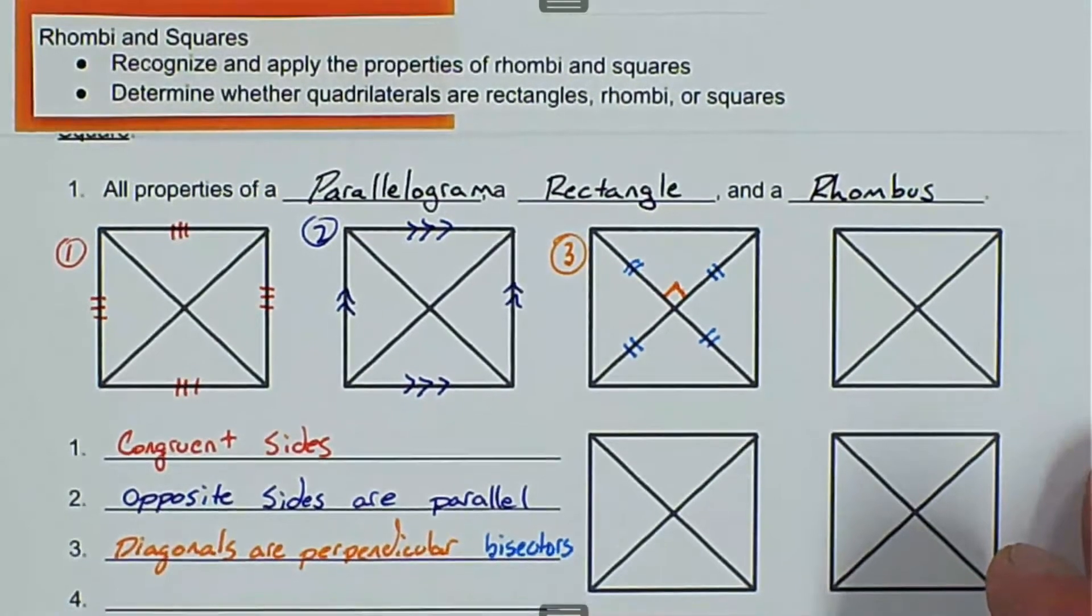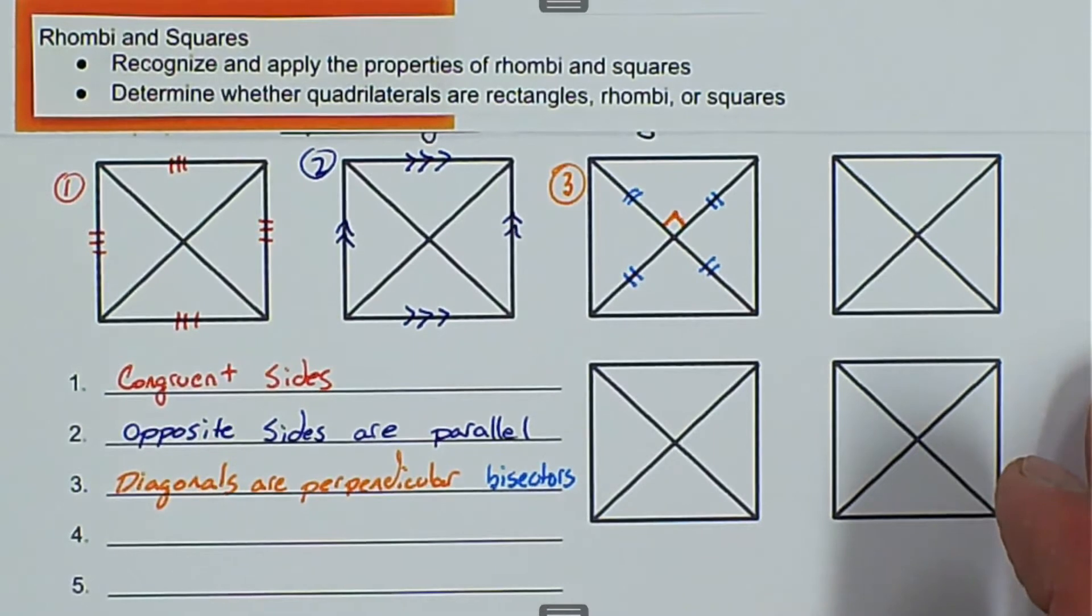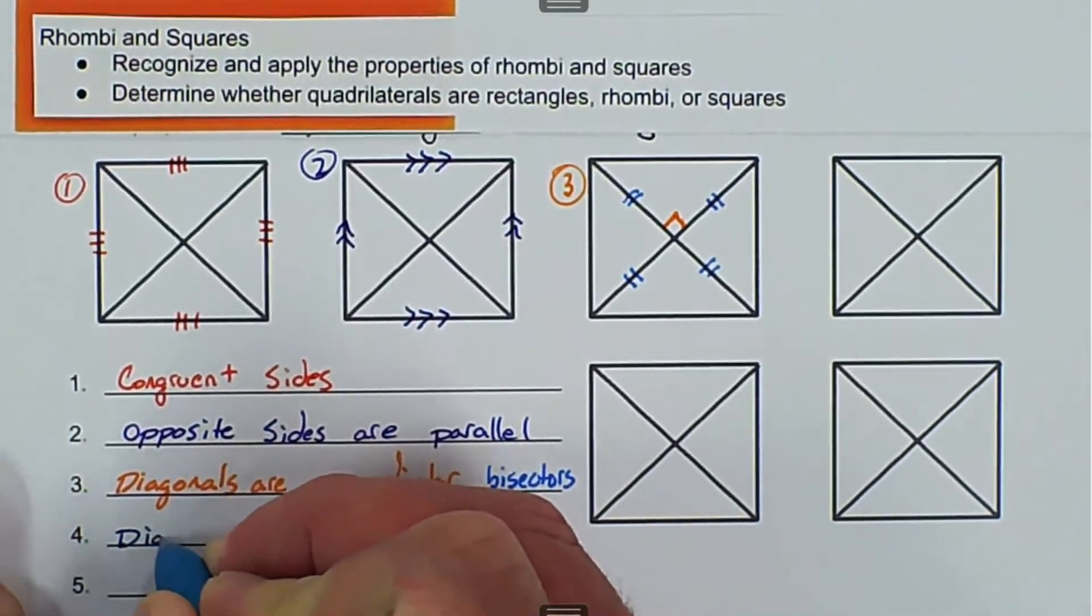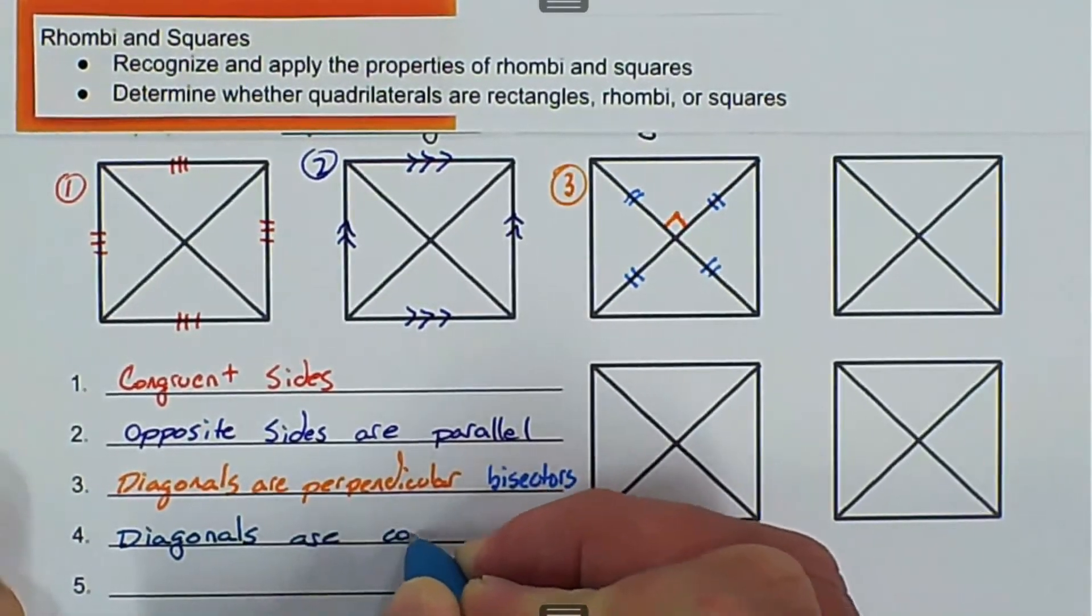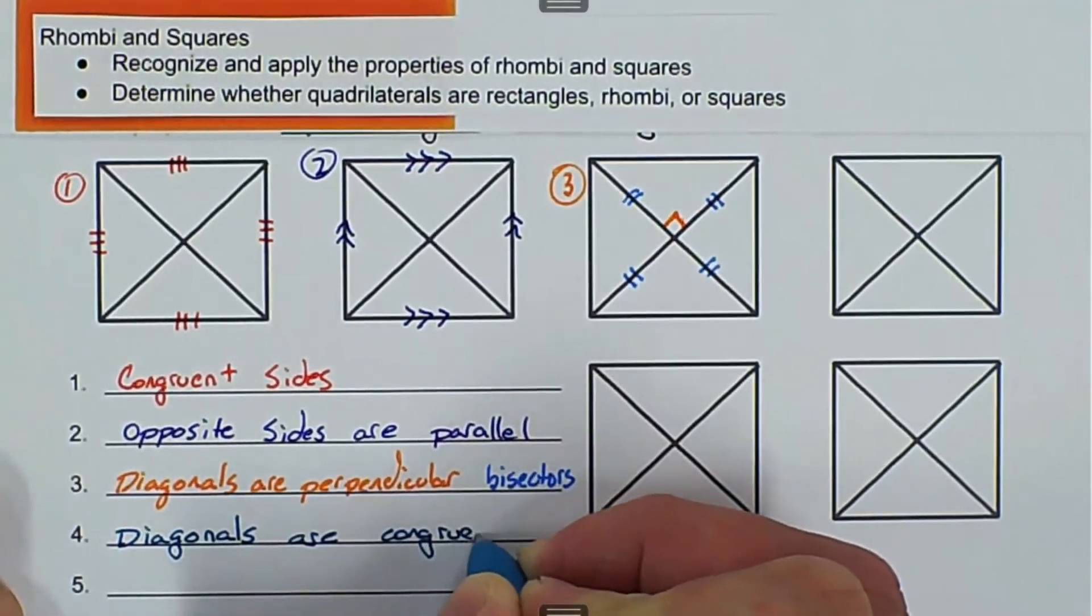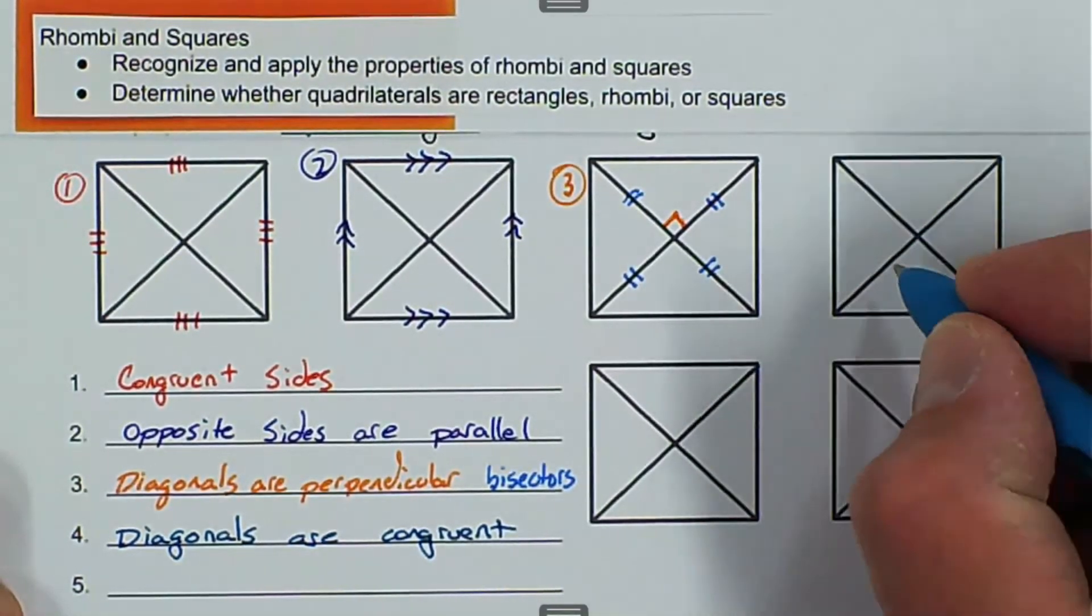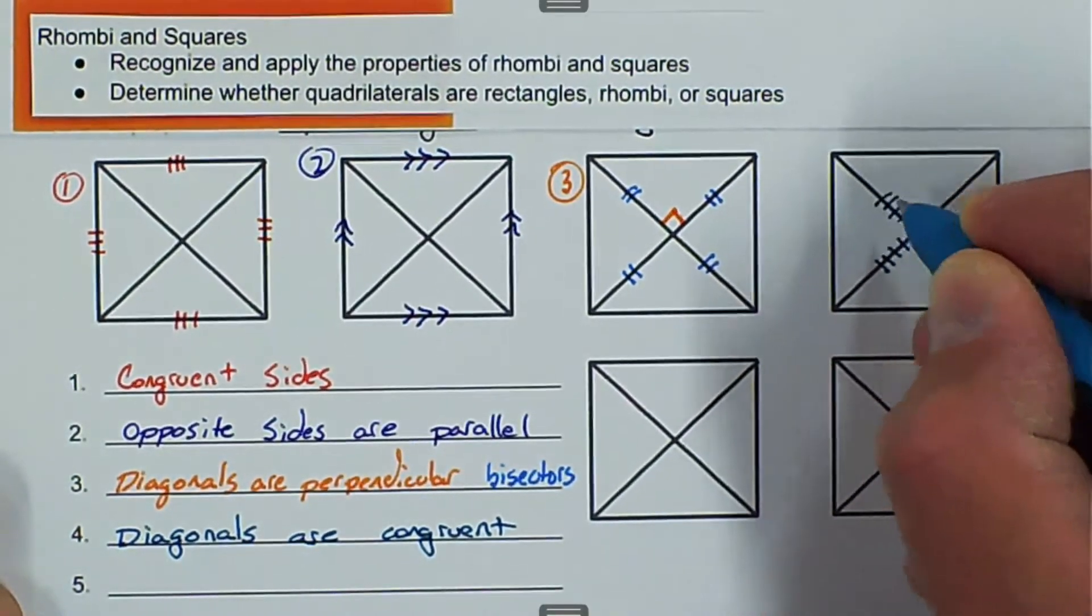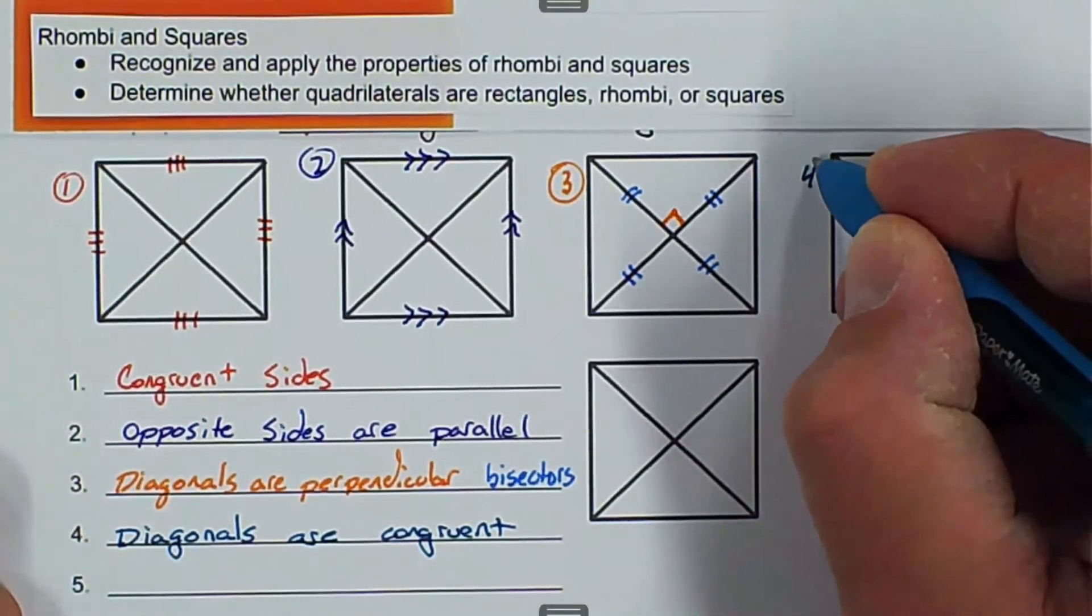The next one we're going to have, we're talking about squares. Number four, all diagonals are congruent. You can kind of see that here, that they're all congruent, but we'll put four congruent marks on this one, and four congruent marks on this one. That'll show that we're talking about the whole diagonal, and that's going to be number four.